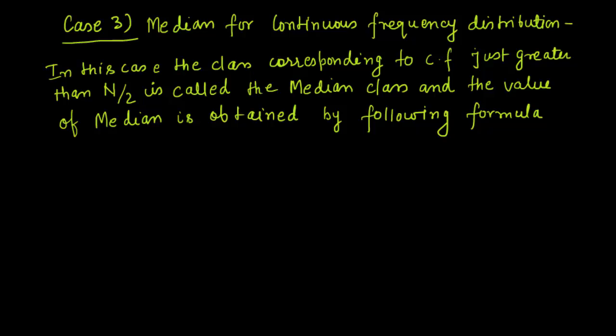The third case is finding the median for continuous frequency distribution. The class corresponding to cumulative frequency just greater than n by 2 is called the median class. The value of median is obtained by the following formula — the median, noted as Md, is equal to: